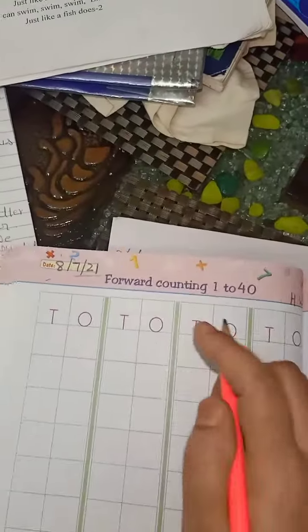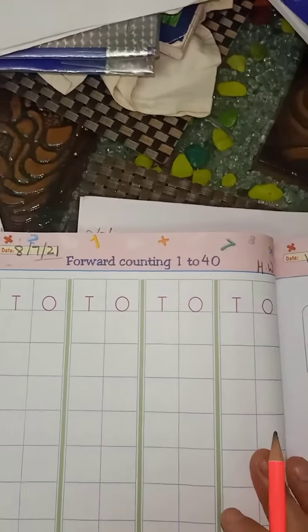And open page number 74. Same as practice forward counting 1 to 40.